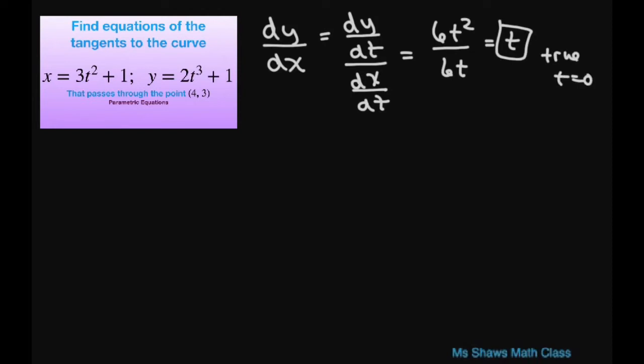So let's see what we get. Now we want to find an equation of the curve. So at the point corresponding to the parameter value of t we're going to write y, we're using our point-slope form, minus your y value which is going to be 2t cubed plus 1 equals t times x minus 3t squared plus 1.